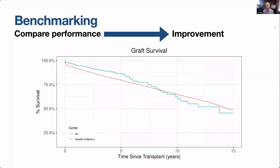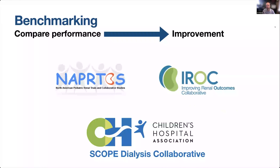Here's an example of a benchmarking tool that we use at Seattle Children's through an organization called NAPROTICS, which stands for the North American Pediatric Renal Trials and Collaborative Studies — a group of over 50 pediatric institutions that provide care to children with kidney disease. This specific benchmarking tool is looking at kidney graft survival after transplant.